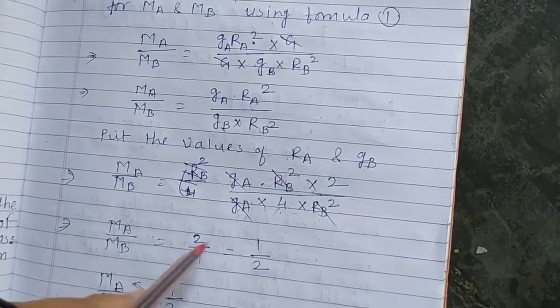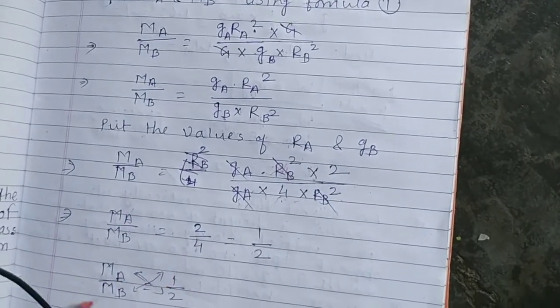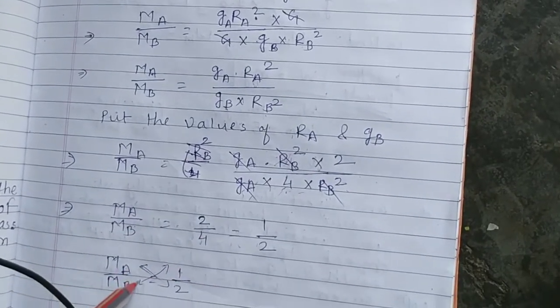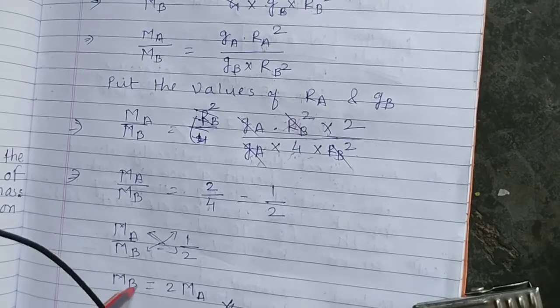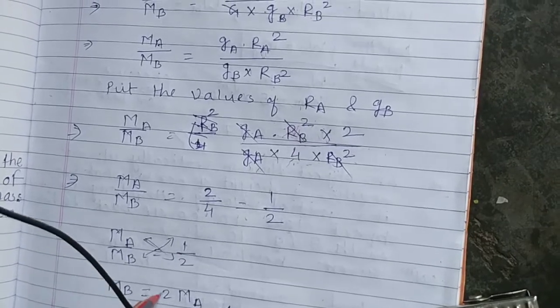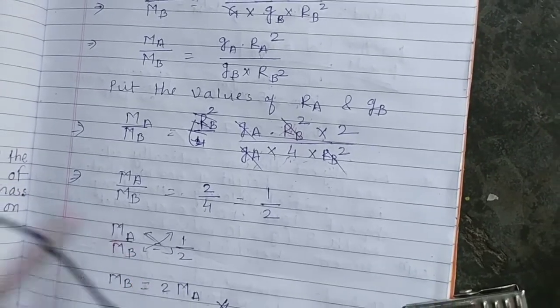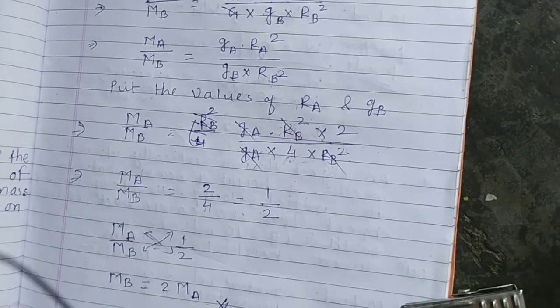So MA upon MB equals half. Cross multiplying, MB equals 2 times MA. This is our answer.